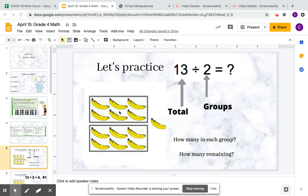The groups are equal. In each group there's 2, 4, 6, so in each group there's 6. Then there's one left out because 6 plus 6 equals 12, and one more makes 13.